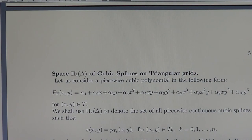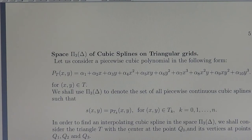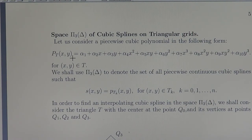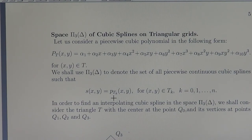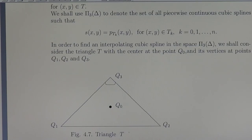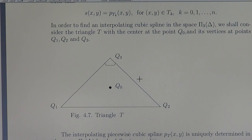The space P3(delta) of cubic splines on triangular grids. Here we consider cubic splines of the following form: P_T(x, y) is a cubic polynomial over the small triangle T. For each triangle T we have a different cubic polynomial. We spline them together with first and second derivatives. We use the symbol P3(delta) to denote the set of all piecewise continuous cubic splines that are the same form as linear splines over triangle T_k, but spliced to create a continuous function together with first and second derivatives.